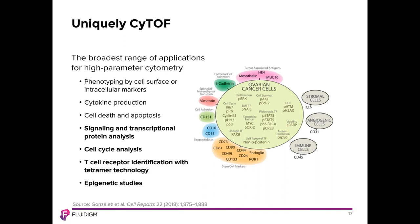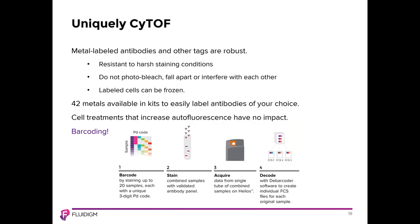High-parameter flow cytometry incorporating signaling, cell cycle, or histone staining is much more challenging, likely due to increased autofluorescence during harsh staining conditions or fluorochrome sensitivity to fixation. Metal-labeled antibodies are robust: resistant to harsh conditions such as methanol permeabilization, they do not photobleach or interfere with each other. Labeled cells can also be frozen and stored at -80°C with little to no impact on staining quality. Fluidime offers 42 metals available in kits to easily label antibodies of your choice.